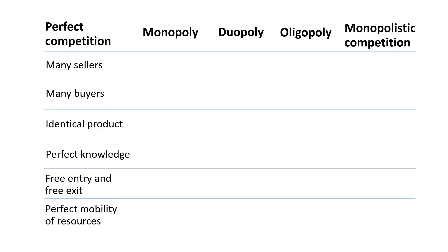For perfect mobility of resources, it means that resources can be moved from place to place without borders, without any barriers, without prevention, without prohibitions. This condition ensures that there is no limitation of production, because when resources can be moved from one place to another, there is no limitation of production.